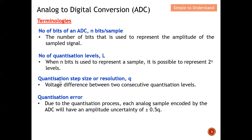I also described the quantization step size or resolution Q — this Q is the voltage difference between two consecutive quantization levels, simply the gap between two quantization levels. Last, I mentioned the quantization error: the maximum possible quantization error is plus or minus 0.5Q. These are the four terminologies from the Part 2 series discussion on ADC.